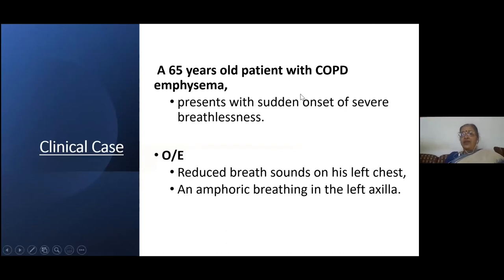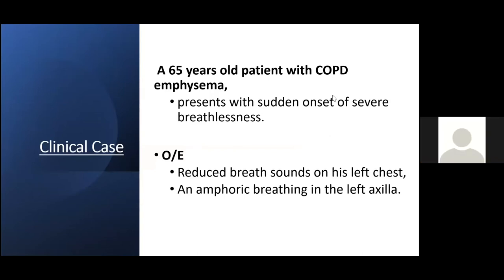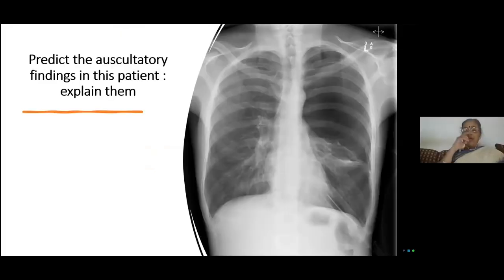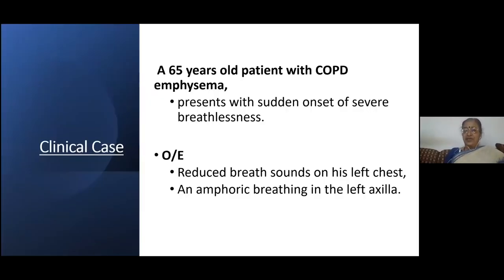Here are some problems. A 65-year-old patient with COPD and emphysema presents with sudden onset of severe breathlessness. On examination we hear reduced breath sounds on the left chest and amphoric breathing in the left axilla. Now I will show you the chest X-ray. What will be the auscultatory findings in this patient? The history is COPD emphysema with sudden onset severe breathlessness, reduced breath sounds on the left side, and amphoric breathing in the left axilla.